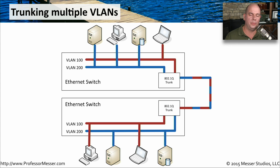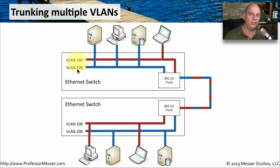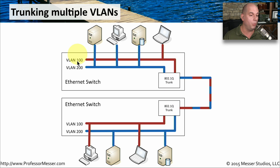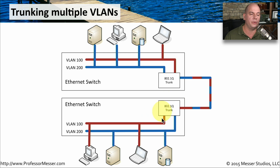Let's look visually at how we can accomplish this trunking. In this particular configuration, I have two switches. Each one of the switches has a VLAN 100 and a VLAN 200, and without any connection between them, these two VLANs can't communicate with each other. So we're going to extend a cable between the two and plug it into an interface on each switch, and configure that interface as an 802.1q trunk supporting VLAN 100 and VLAN 200 on both switches. If there's traffic from VLAN 100 that needs to go from one switch to the other, the trunk interface will grab that information, tag it as VLAN 100, and send it through the link. On the other end, the switch receives that traffic, identifies it as tagged with VLAN 100, removes the tag, and puts it onto VLAN 100 on that switch.